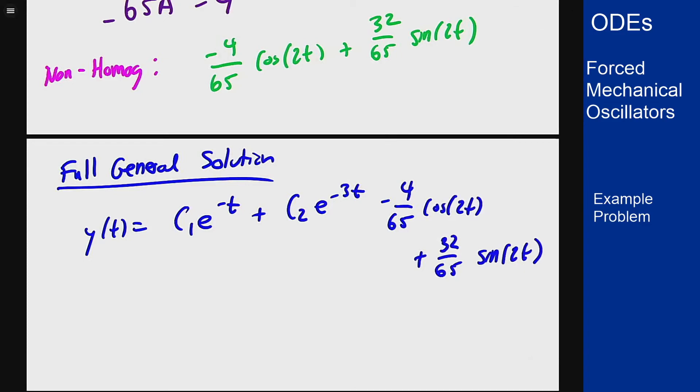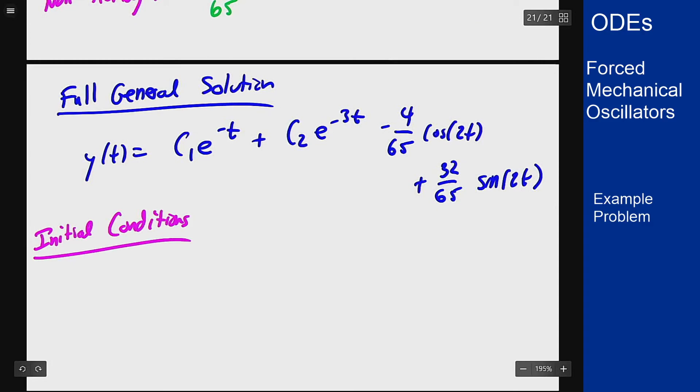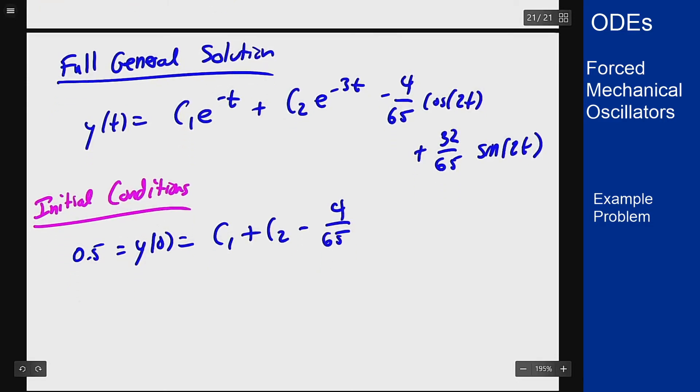Now finally we have to figure out c1 and c2 to meet the initial conditions. Plugging in 0 to this and the first derivative tells me that I need 0.5 to be y of 0 which is c1 plus c2 minus 4 over 65, and 0 to be y prime of 0 which is negative c1 minus 3c2 plus 64 over 65.